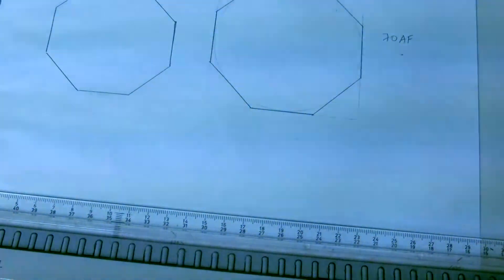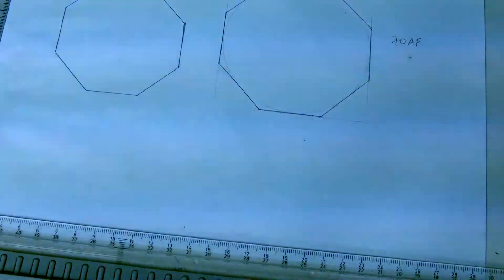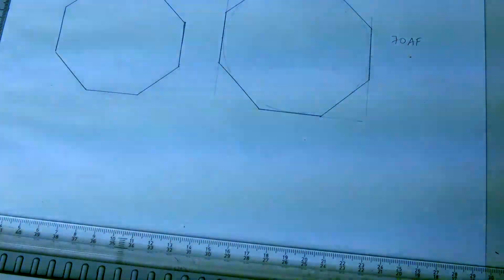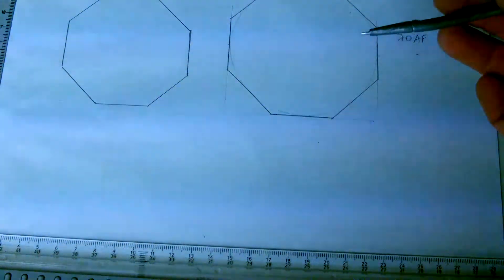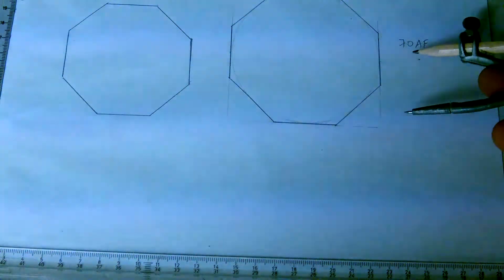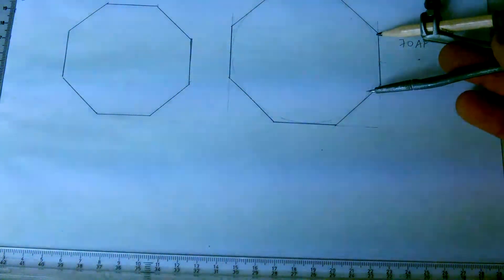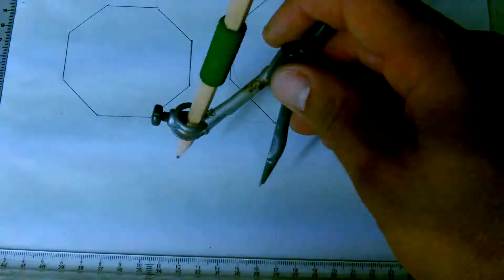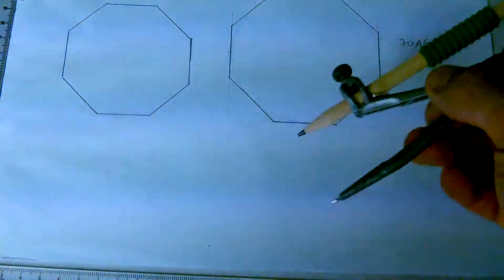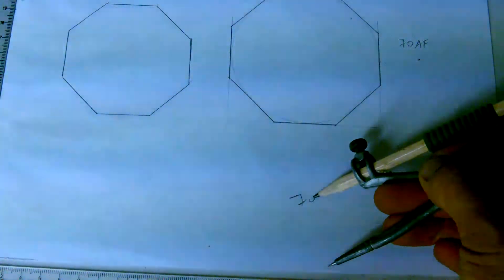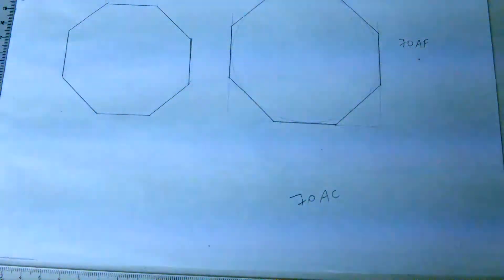Now I'm going to show you the only method we have for an octagon across corners. That would mean I'm going to do the same octagon, but now it's not the same octagon. It's 70 AC, same dimension, but this time it's 70 across corners.